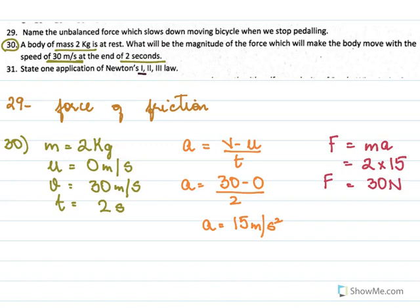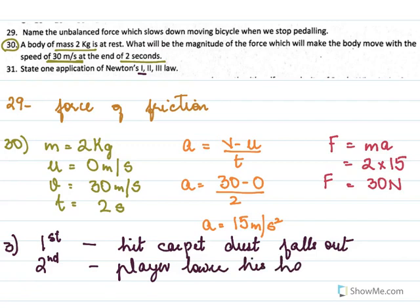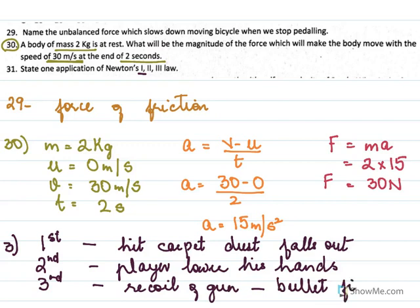State one application each of the first, second, and third law. For the first law: when we hit a carpet, the dust falls out. For the second law: a player lowers his hands while catching the ball. For the third law: the recoil of a gun when a bullet is fired — this is the application of the third law.